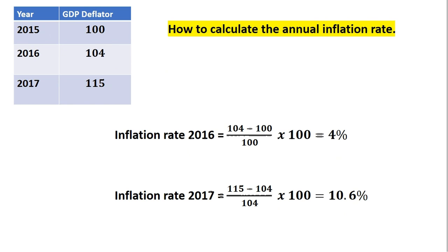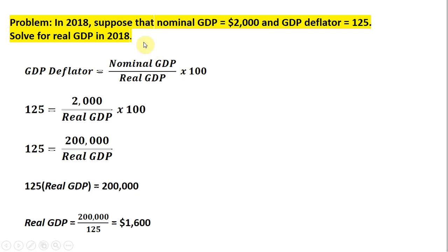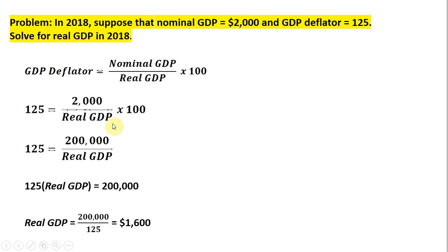One more problem, and a slightly more complicated one. Suppose in 2018 an economy has a nominal GDP of 2,000 and the GDP deflator equals 125. What is the value of real GDP in 2018? Writing down our GDP deflator formula — nominal GDP divided by real GDP, multiplied by 100 — we know two out of three things: the GDP deflator and nominal GDP. Substituting those values in: 125 for the GDP deflator and $2,000 for nominal GDP, we have one equation and one unknown, so we solve for real GDP.